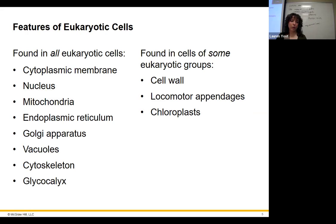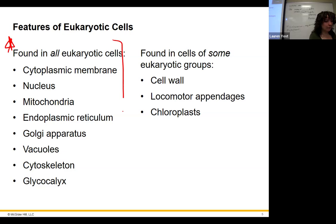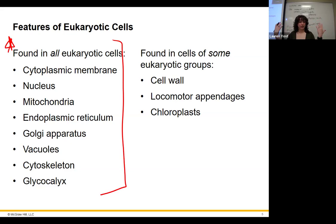All eukaryotic cells share certain structures. They all have a cytoplasmic membrane — just like bacteria, it holds the cytoplasm and all its contents. They have a nucleus, which contains the genetic information. They have mitochondria for energy production, endoplasmic reticulum, and a Golgi apparatus.